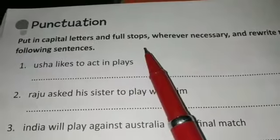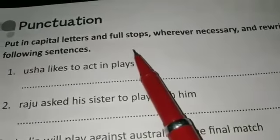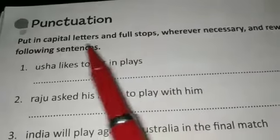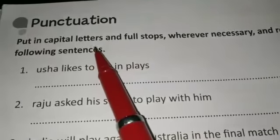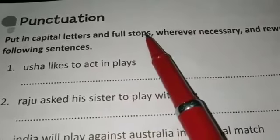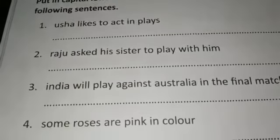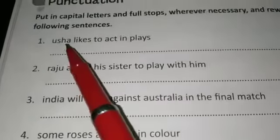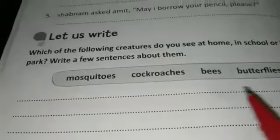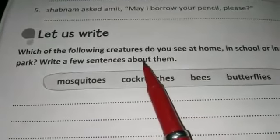Next is the punctuation section. You have already learned the usage of capital letters and full stops. We use capital letters at the beginning of a sentence and also in proper nouns. We use a full stop at the end of a sentence. All the sentences here begin with a small letter — you have to rewrite each sentence correctly using a capital letter at the start.